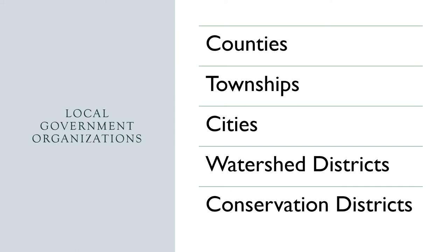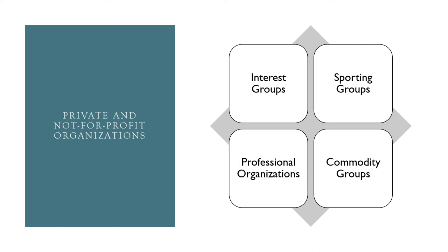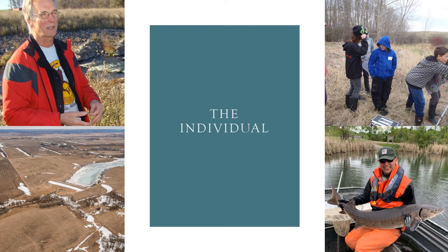Even those with limited territory and interest can play a role in determining how those who live and work within their jurisdiction interact with local water and land resources. There are more private and not-for-profit organizations than one could count when it comes to having an interest in managing land and water resources within the basin. These groups can also have a powerful influence on determining policy at the local, state, and national level.